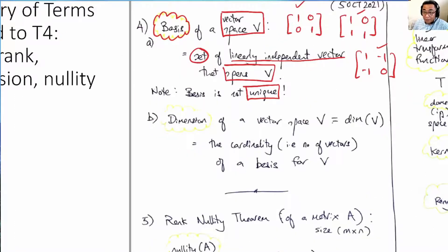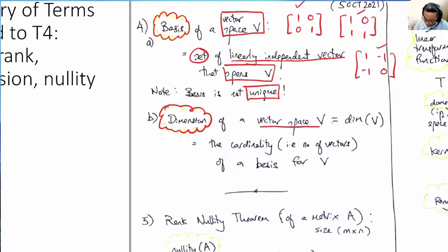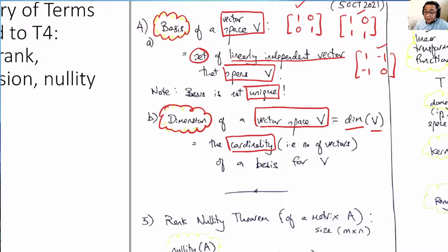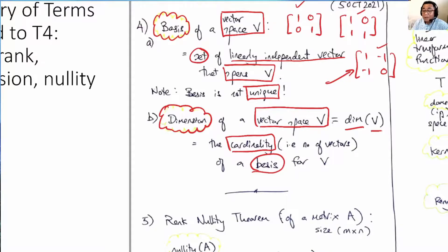Once we have the basis, we are interested in counting how many elements are in it. That count is called the dimension of the vector space, written as dim(V). The dimension is the cardinality — the number of vectors in the basis. R2 has dimension 2, R3 has dimension 3. For a subspace, we count the number of vectors in its basis.